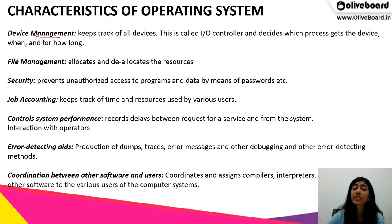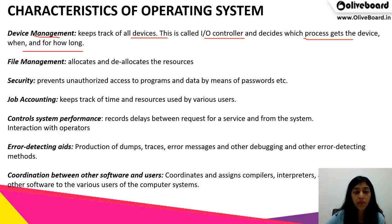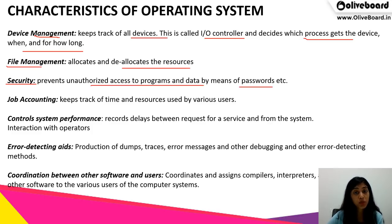Next is device management — it keeps track of all devices and is called the input-output controller. It decides which process gets the device, when, and for how long. Then file management — it allocates and deallocates resources through file management; whenever we search for a particular file it can only be done using the operating system. Security — it prevents unauthorized access to programs and data by means of passwords, which are also managed by the operating system.